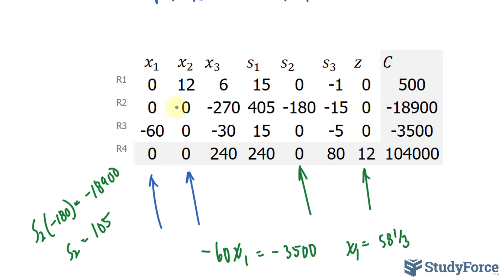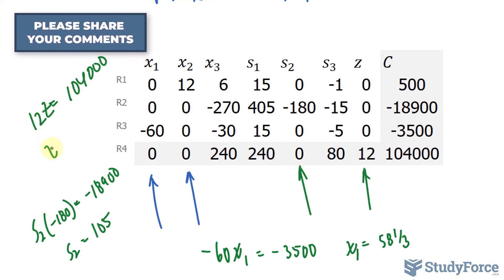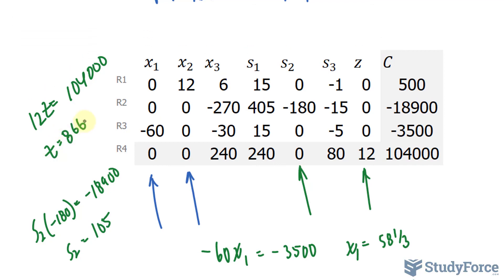And lastly, this column, our z column, which gives us our maximum profit. 12 times z is equal to 104,000. Dividing both sides by 12, we end up with the maximum profit of 8,666 and 2 thirds.